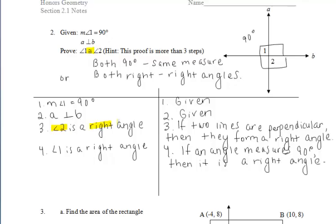At this point, we've said that angle two is a right angle and that angle one is a right angle. So we can now say that those two angles are congruent. Why? Because if two angles are right angles, then they are congruent.